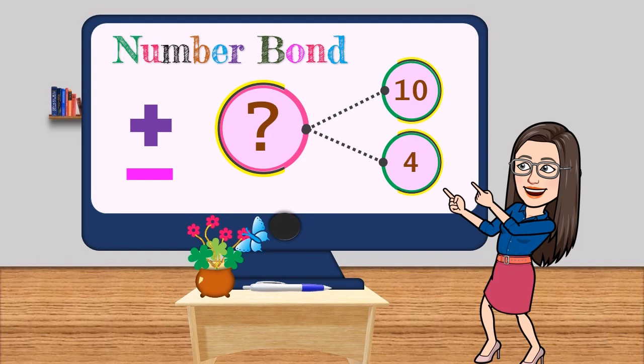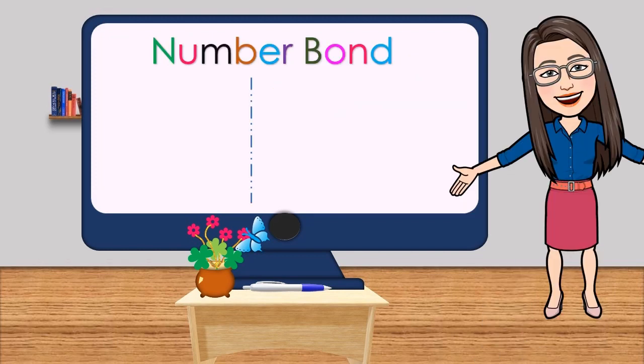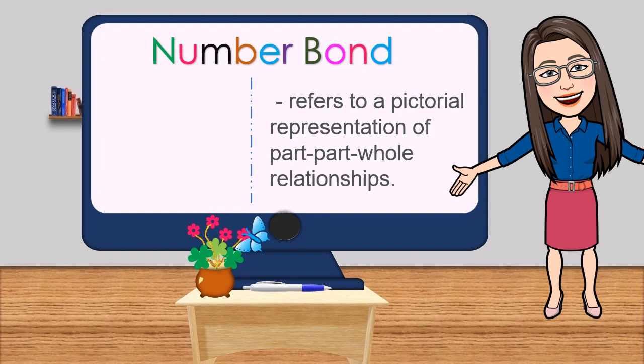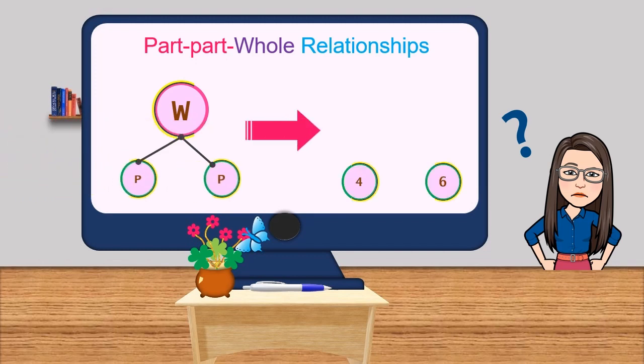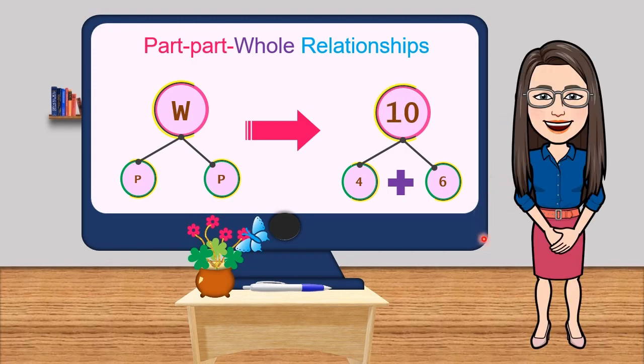Let's do some activities. In general, a number bond refers to a pictorial representation of a part-part-whole relationship. What does it mean by a part-part-whole relationship? This means that a whole can be broken down into pieces such as the parts, or the parts can be combined to make up the whole.